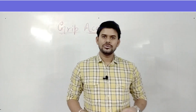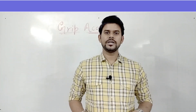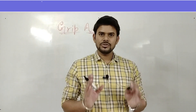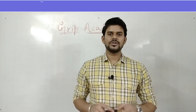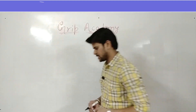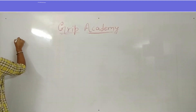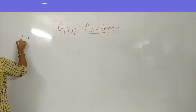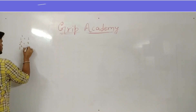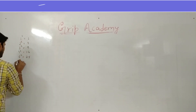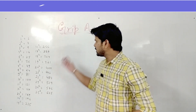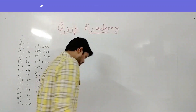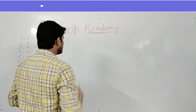Hello everyone. In this video we are going to learn how to find the square of any number between 1 to 125 within 3 to 5 seconds. For that we must know what is the square of 1 to 25 first. I've already written the squares of all the numbers from 1 to 25, so let's start finding the square of other numbers from 25 to 125.